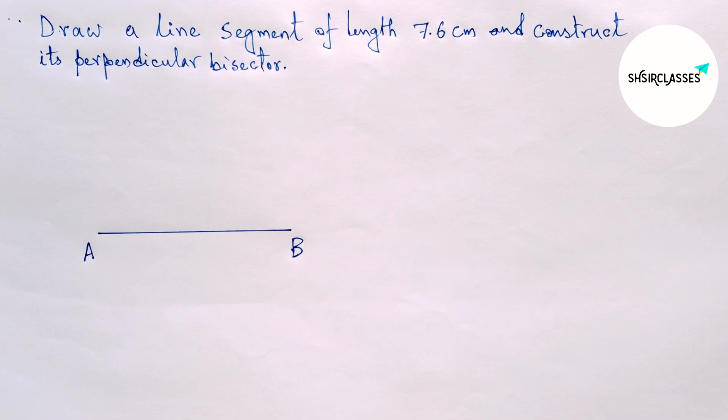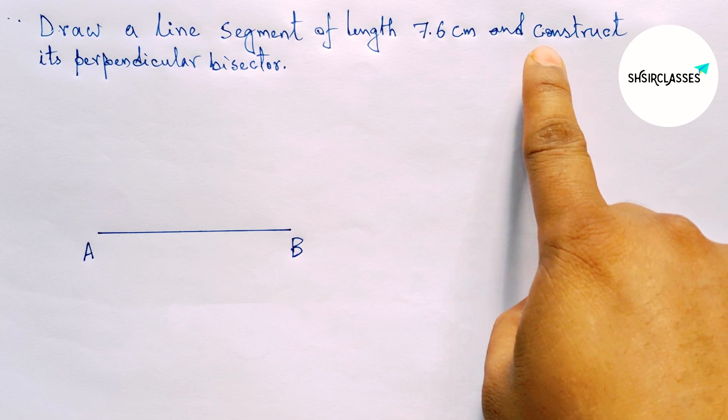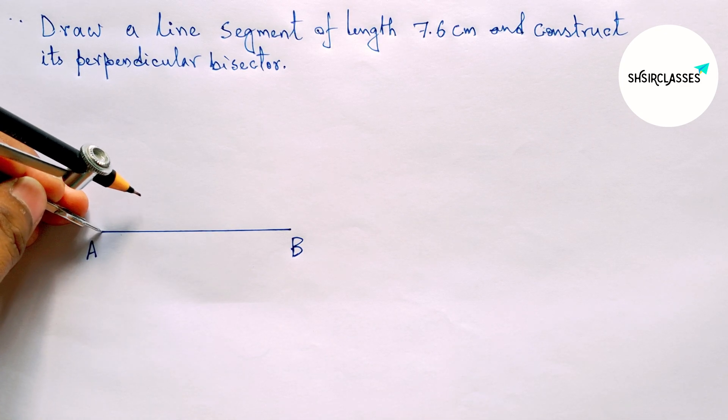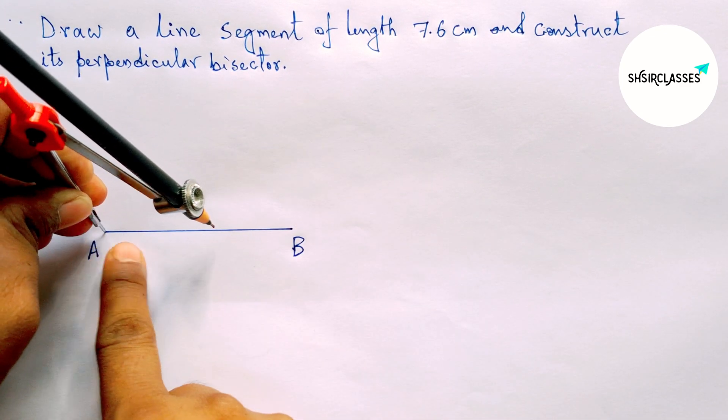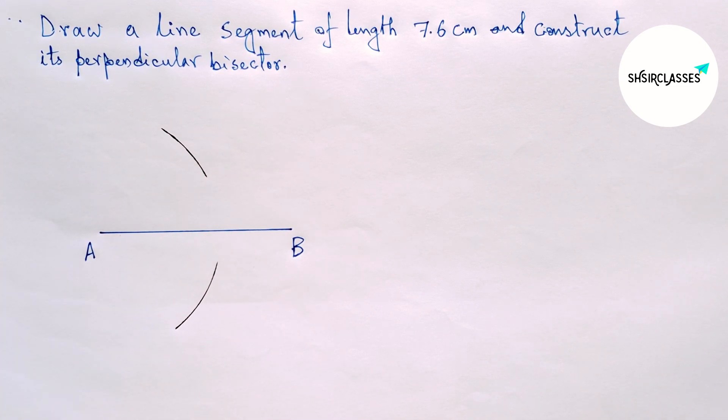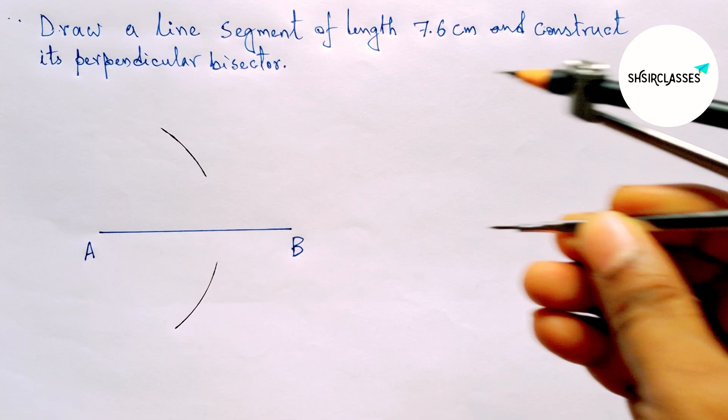Next, construct its perpendicular bisector on line AB with the help of a compass. Place the compass on point A, take a distance greater than half of AB, and draw an arc this way. Again, with the same length...